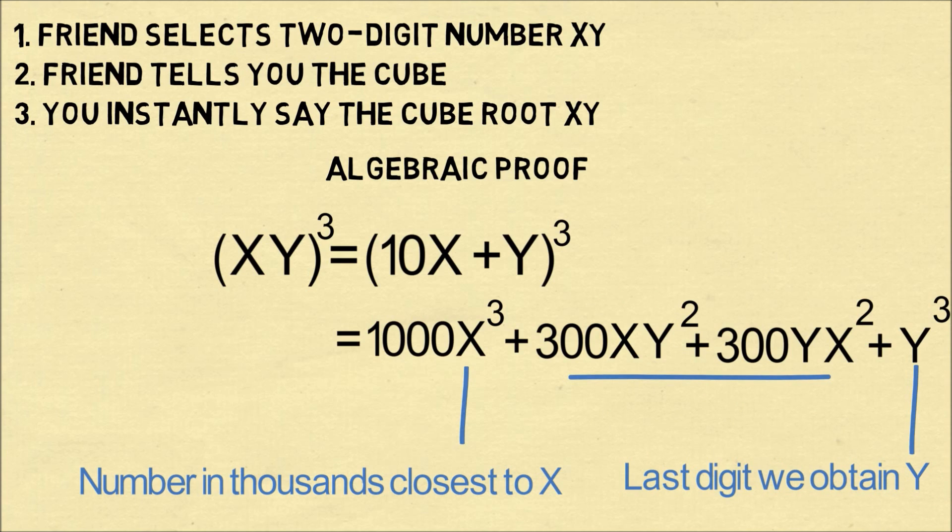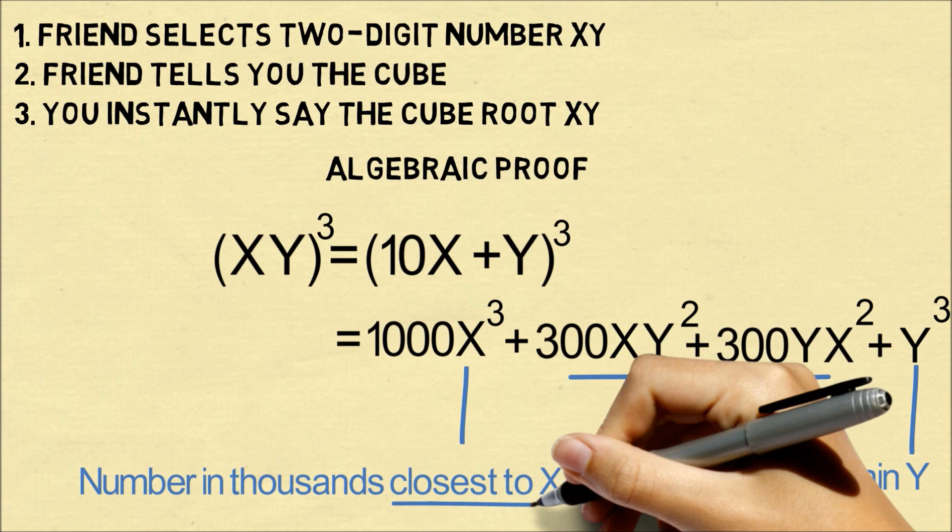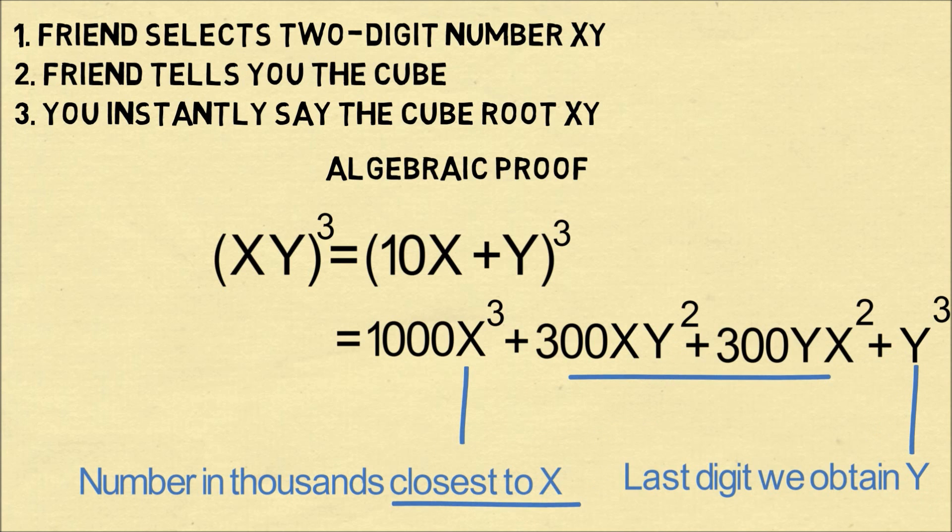We're going to have some extra amount beyond x³ because we have this 300xy² plus 300y²x. So we want to look to the closest one.